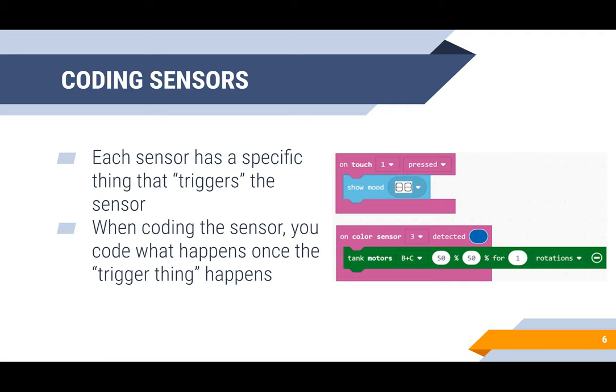In the picture on the right, the pink blocks shown are the trigger blocks. For example, 'on touch pressed' means that when the touch sensor is pressed, it will execute a specific action.